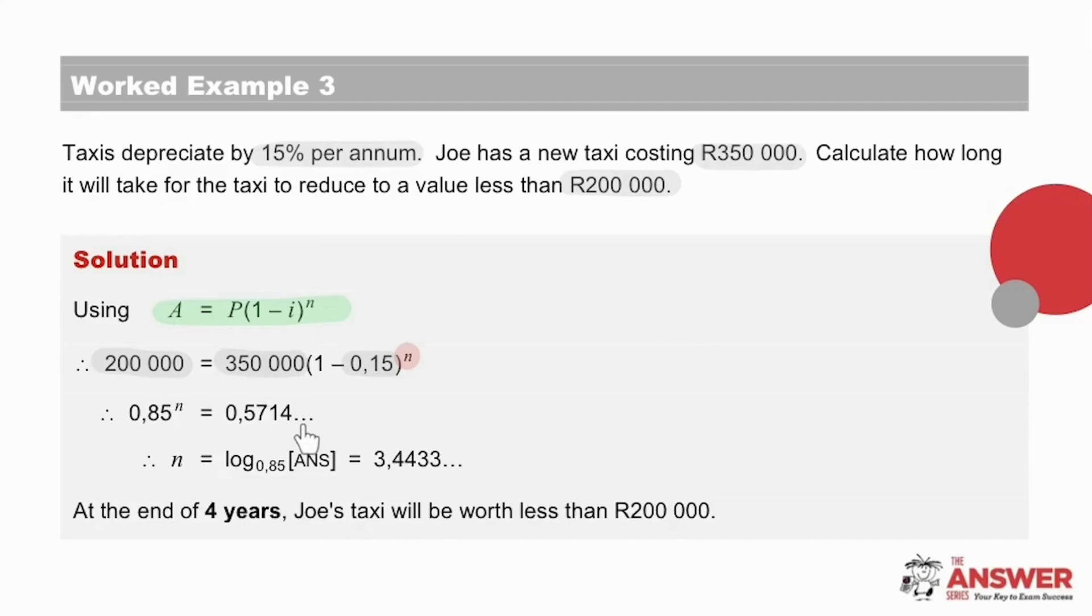The calculator is able to hold this answer, which helps for not rounding off mid-calculation. When we then apply the log definition to convert from exponential form to log form, we need to use the answer button, which will activate the most recent answer calculated. And so to calculate n, we press log 0.85 and the button ans to get our answer for n.